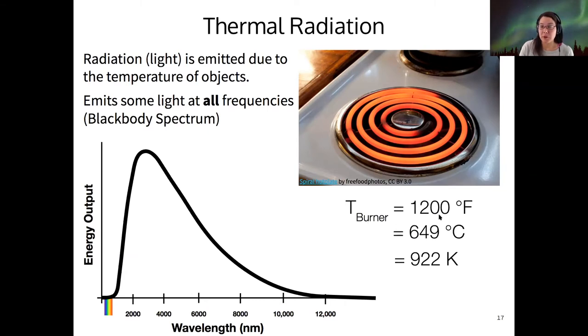And so this plot in particular is for this burner. And the way that we figure out how much it puts out at every wavelength is by measuring its temperature. So the temperature of the burner is about 1200 degrees Fahrenheit. And in order to produce a blackbody spectrum, we need to know the temperature in units of Kelvin. The reason we use Kelvin is because it's tied to absolute zero. And so any object that has a temperature greater than zero Kelvin produces a blackbody spectrum.